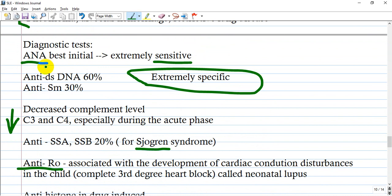What are the diagnostic tests? The best one is anti-nuclear antibody. If a patient has any autoimmune antibody, the ANA test will be positive. This is extremely sensitive. What does that mean? If a patient has a positive test, we have to do a more precise one. If the patient is negative, it means the patient does not have lupus. What are the tests that are extremely specific, or at least specific? Anti-double-stranded DNA is 60% specific. Anti-Smith antibodies are 30% specific. We can also find decreased complement levels like C3 and C4, especially during the acute phase. During the acute phase, anti-nuclear antibodies increase and complement decreases from consumption.